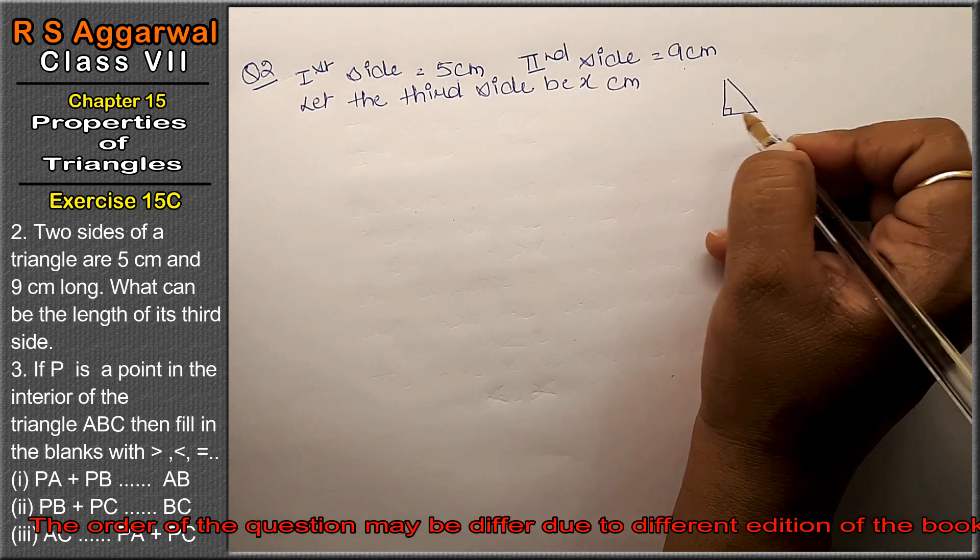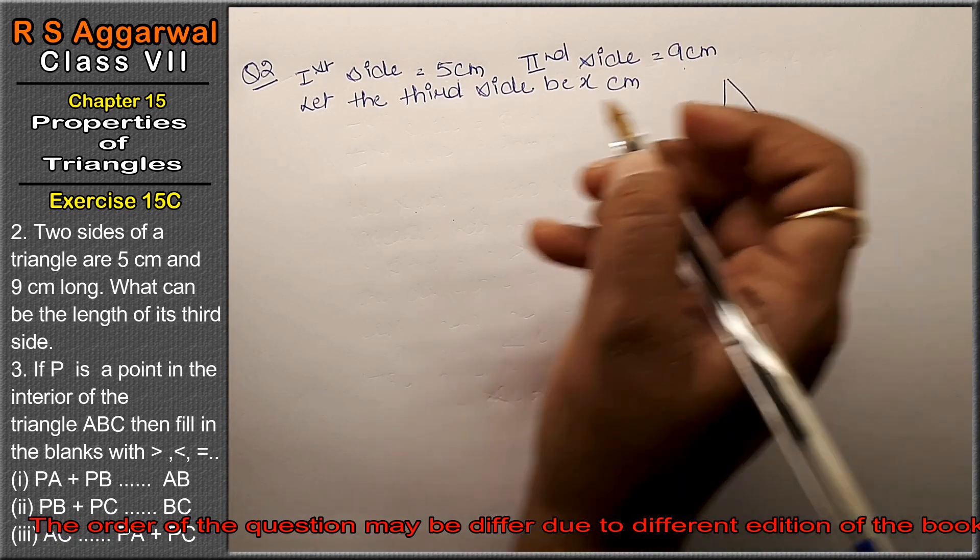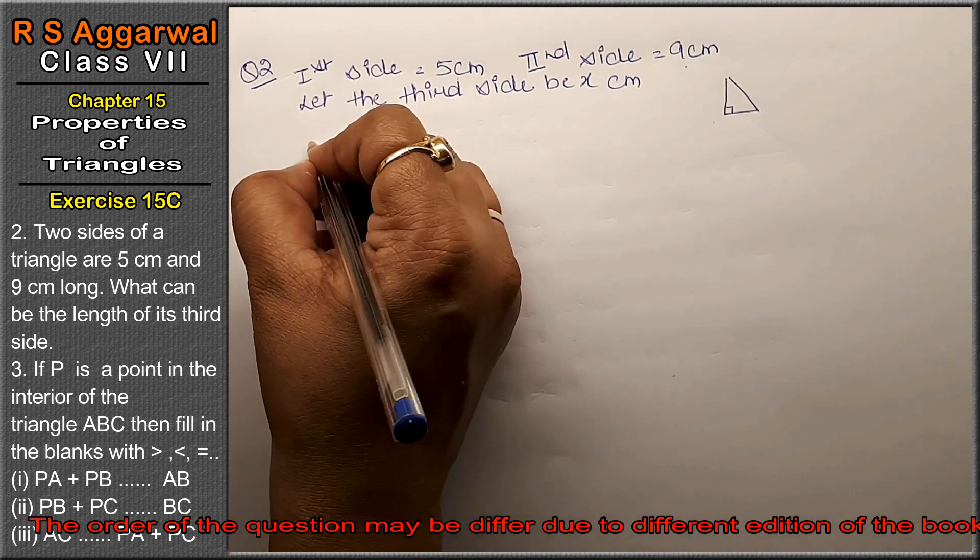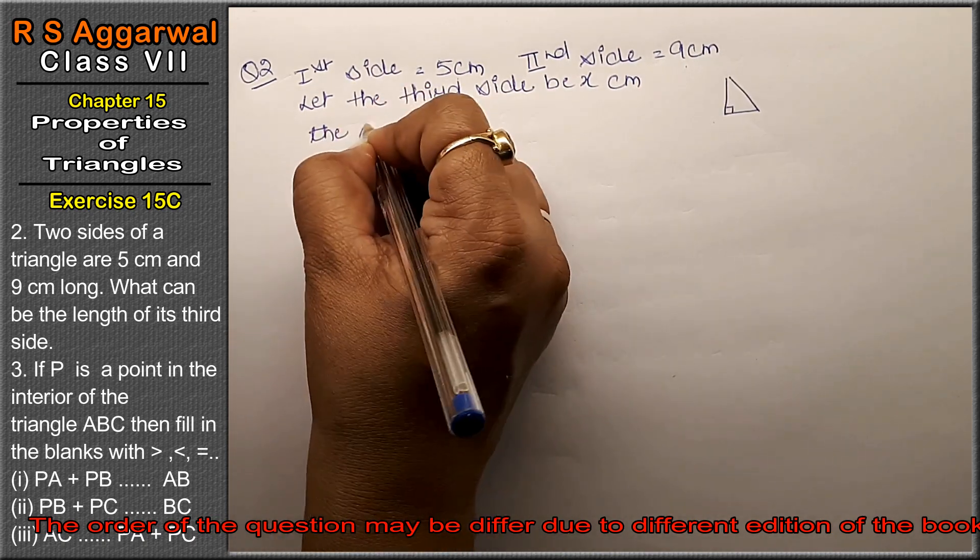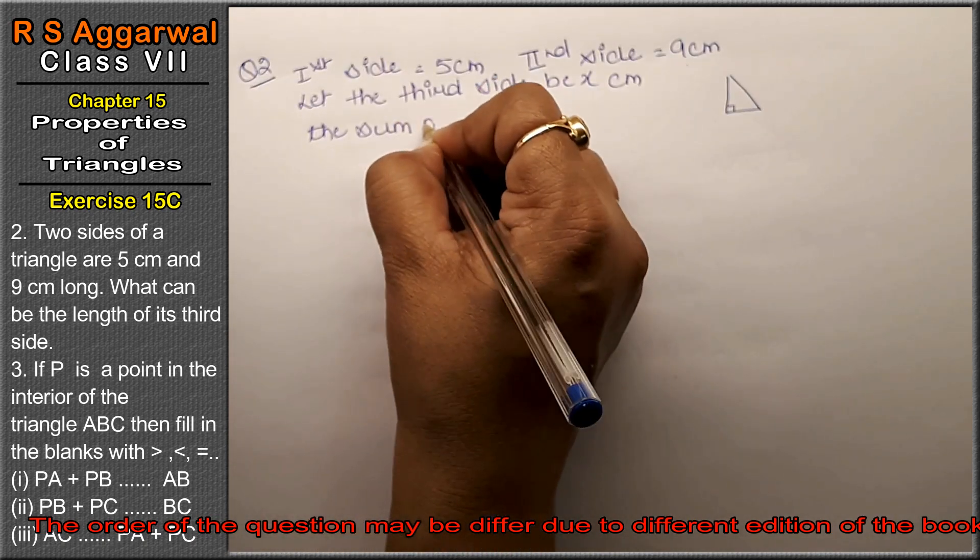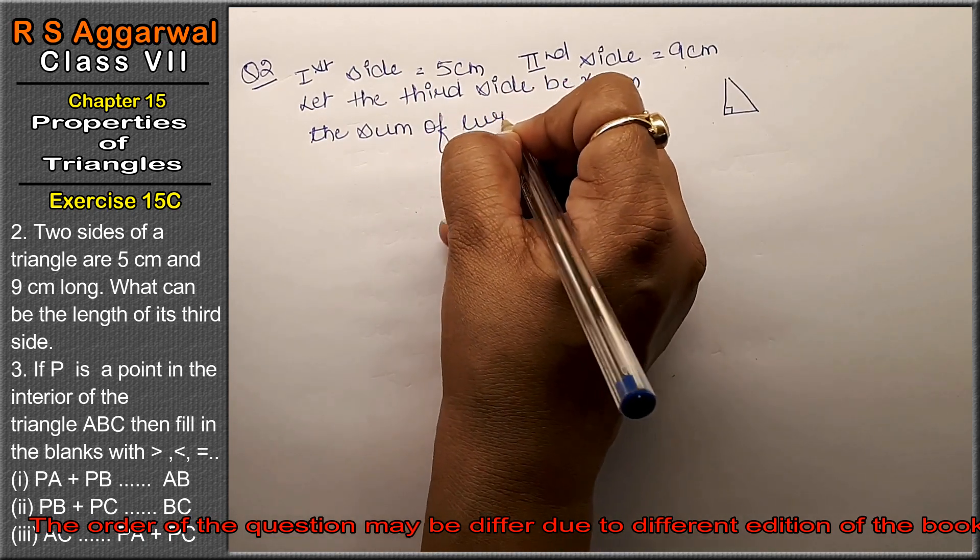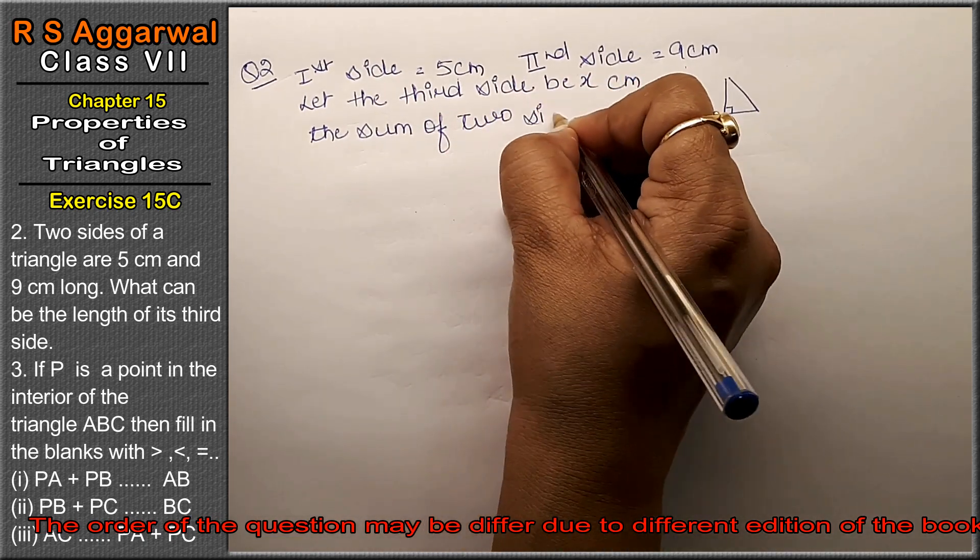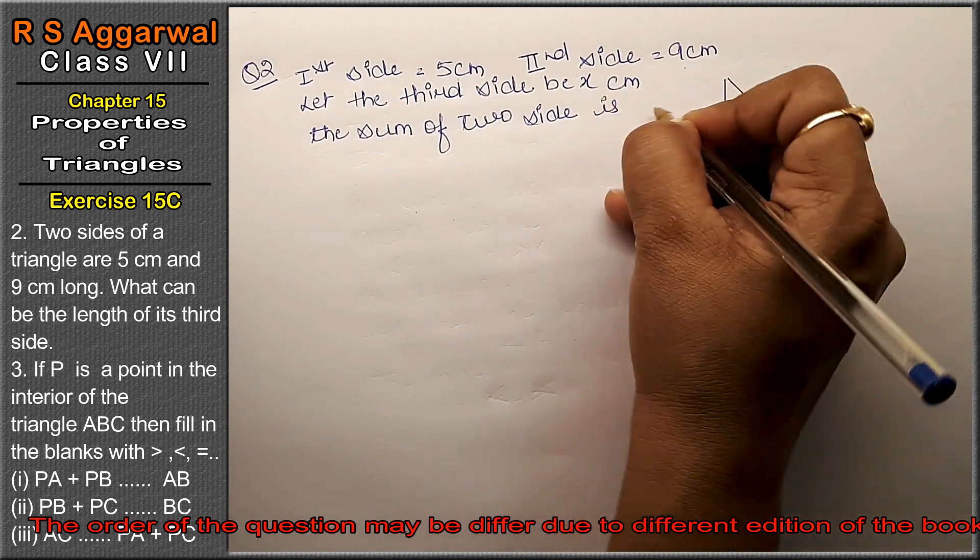So we know that the sum of two sides is greater than the third side. 5 plus 9 equals 14.